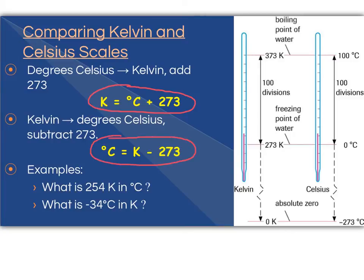On the right here, you can see that absolute zero is going to be zero Kelvin and negative 273 Celsius. The freezing point of water is 273 Kelvin and zero degrees Celsius. And the boiling point of water is 373 Kelvin and 100 degrees Celsius.